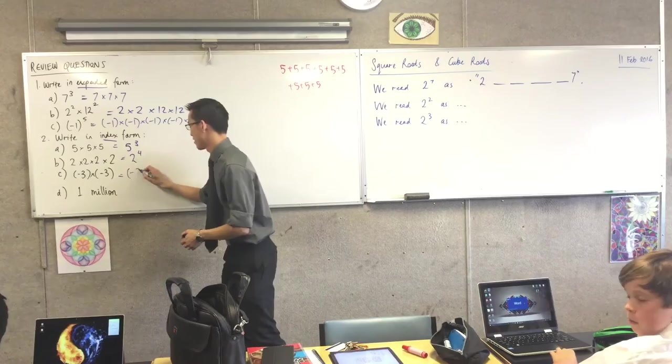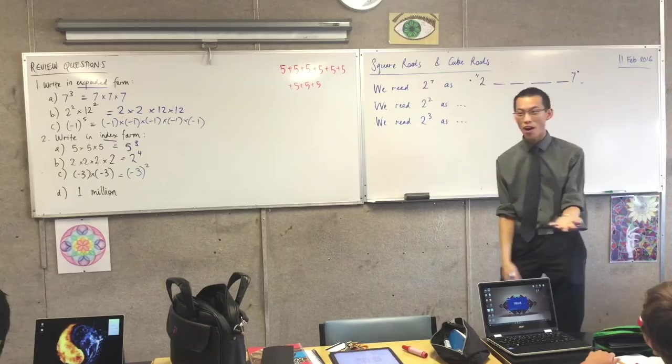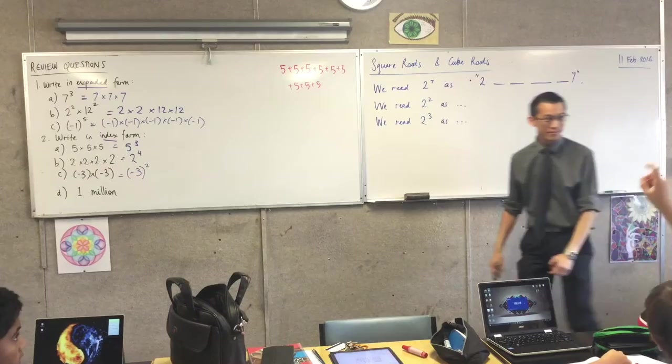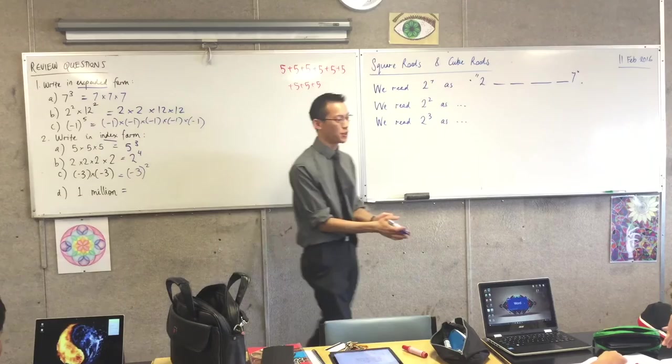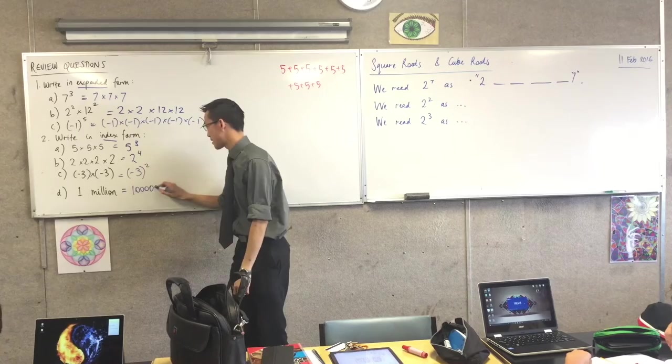Now, the last one's a bit of a curveball. That's why I made it the last one. Does anyone want to offer a suggestion? Somebody hasn't said anything yet? Kimmy, do you want to have a go? One million to the power of one. Okay. So, there's a few different ways to write this one. And it's a bit sneaky. So I'm actually going to give you a few different ones, right? Let's go with this one first. So I'll go one million. That's six zeros, isn't it?